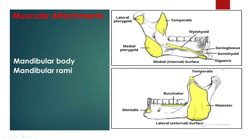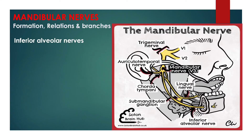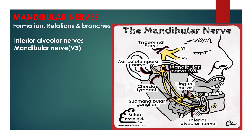The temporalis muscle attaches to the coronoid process and the masseter attaches to the ramus. The lateral pterygoid inserts into the neck of the mandible and the medial pterygoid inserts into the ramus near the angle of the mandible.